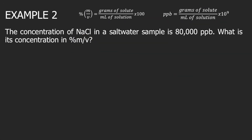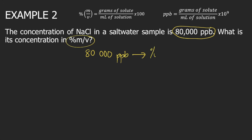Example 2: the concentration of NaCl in a saltwater sample is 80,000 PPB. What is its concentration in percent mass per volume? This time, we are given the concentration in PPB — which is 80,000 — and we will convert this to percent mass per volume.